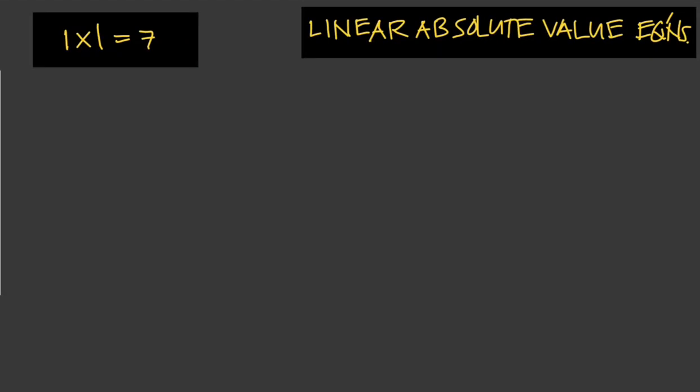We will solve linear absolute value equations. In solving equations with absolute value, we can end up with more than one possible answer. This is because what is in the absolute value can either be negative or positive. So we must account for both possibilities when solving equations — we have to consider both the positive and negative.